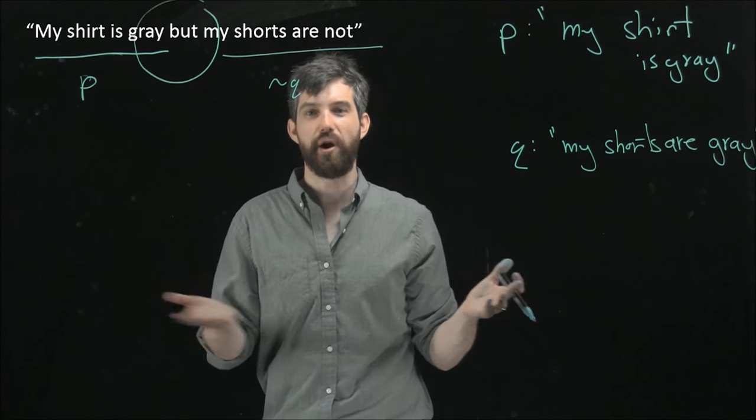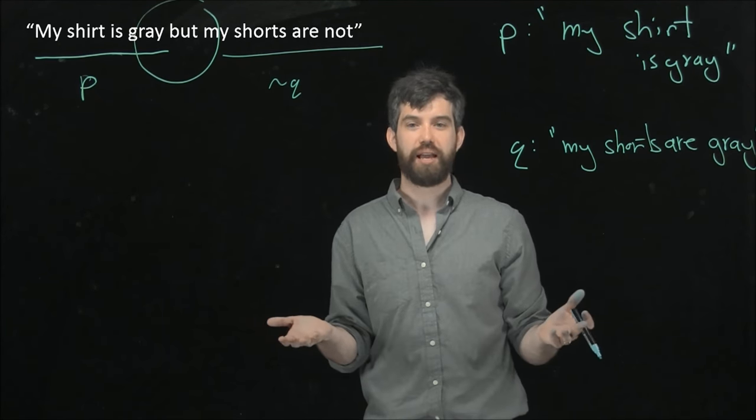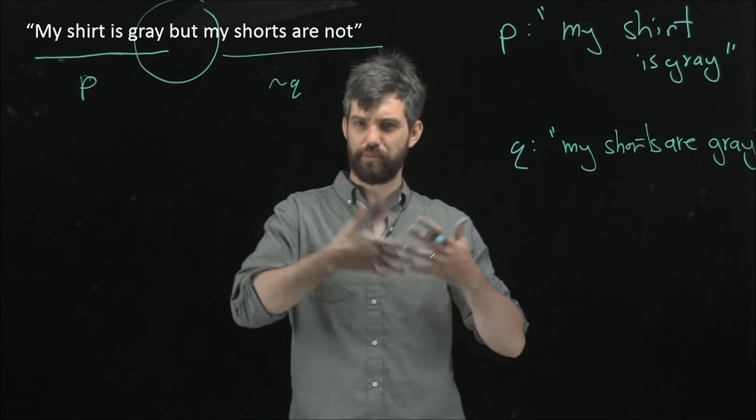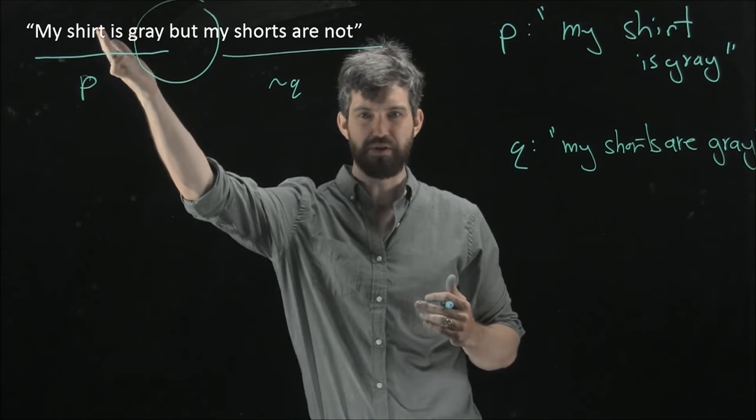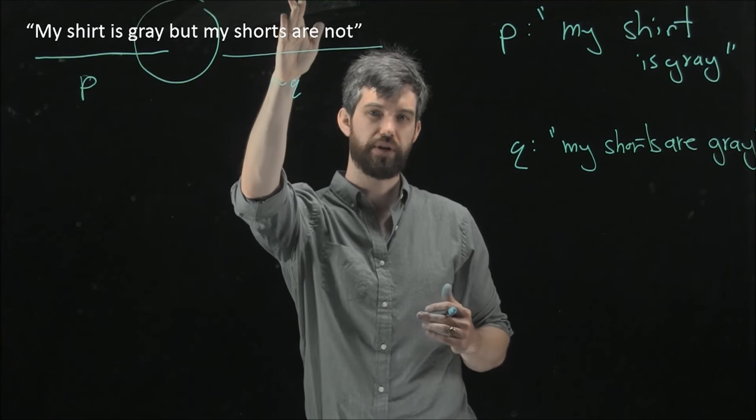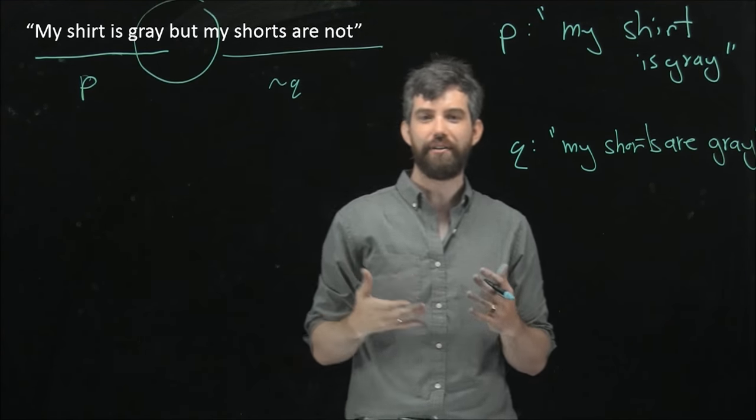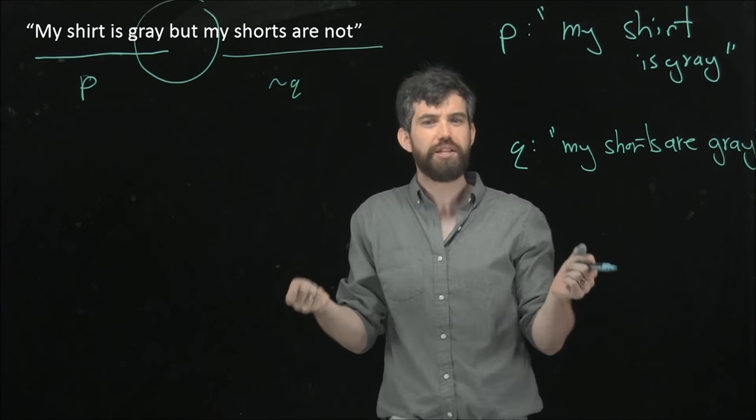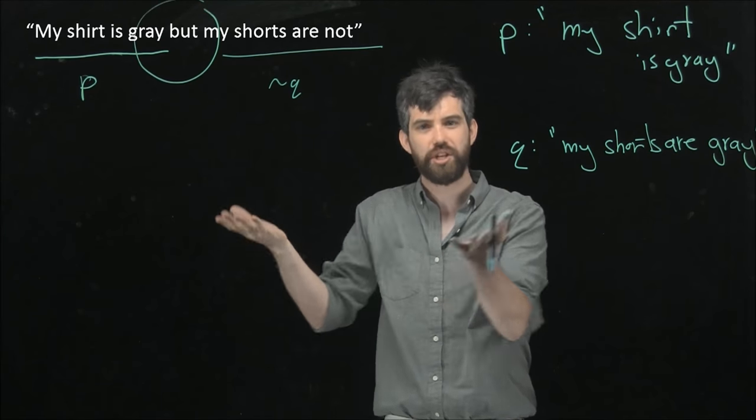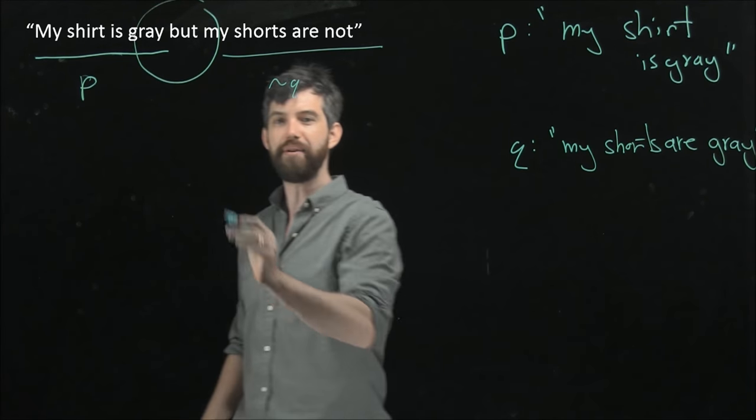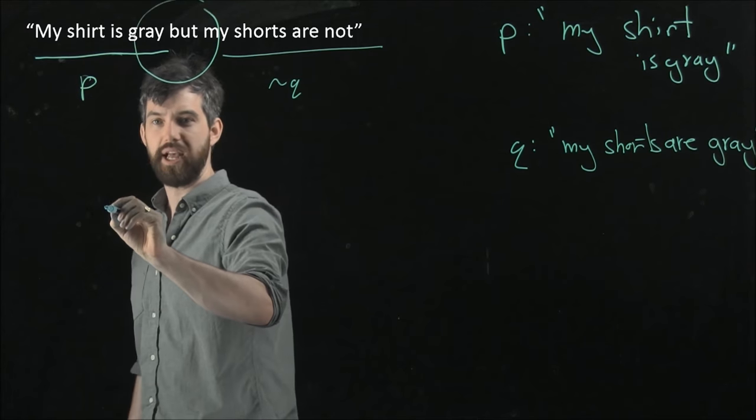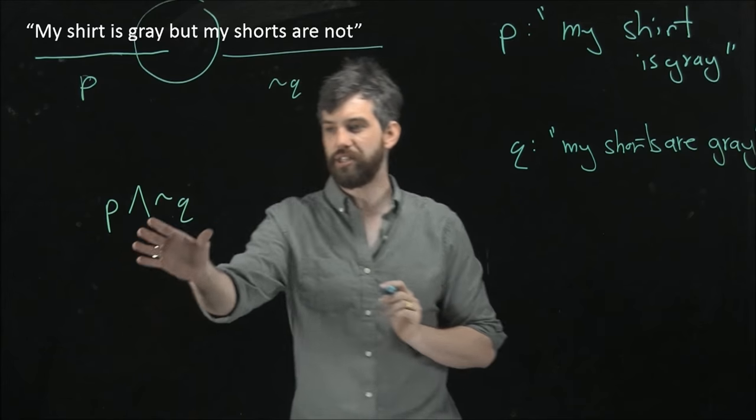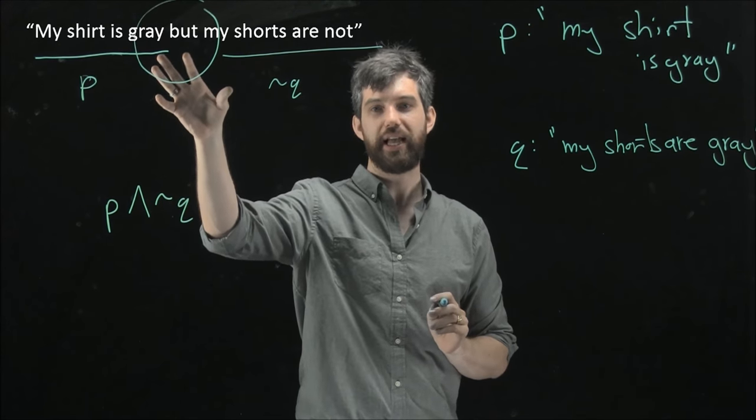Indeed, but and and, logically, are basically the same thing. In English, sometimes we use but instead of and when the but is somehow surprising. You've set the pattern of being grey, but it's surprising that the shorts are not grey. There's a setup of expectations in English when we use but instead of and. But logically, they really do mean the same thing. You're saying both of these statements are simultaneously true. And so, I'm going to put this all together as saying this is p and not q. And that is the logical form that this particular sentence has.